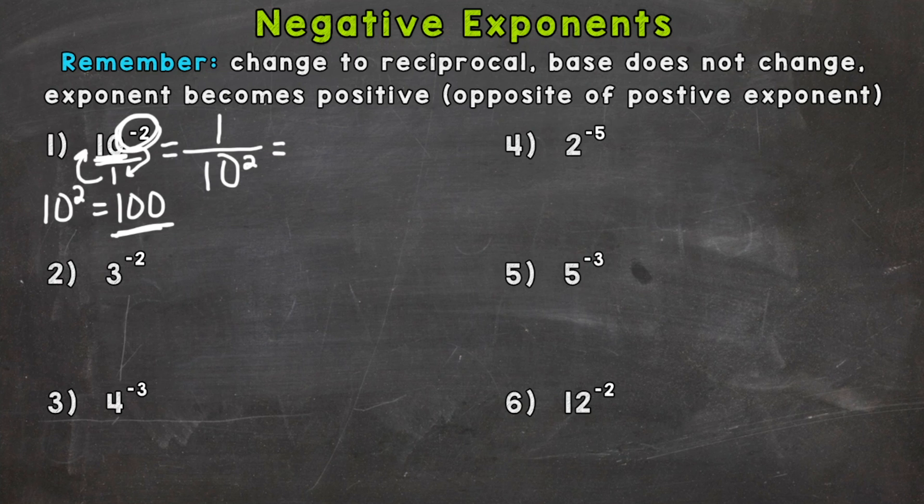Now we're able to solve and find our answer. We know that 10 to the second power equals 10 times 10, which is 100. So our answer is one hundredth.